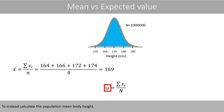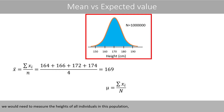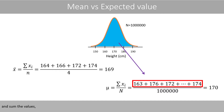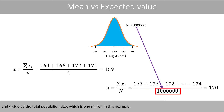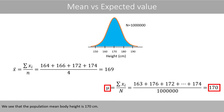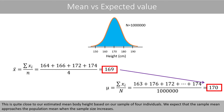To calculate the population mean body height, we would need to measure the heights of all individuals in this population, sum the values, and divide by the total population size, which is one million in this example. We see that the population mean body height is 170 centimeters. This is quite close to our estimated mean based on our sample of four individuals. We expect that the sample mean approaches the population mean when the sample size increases.